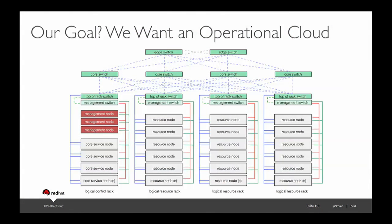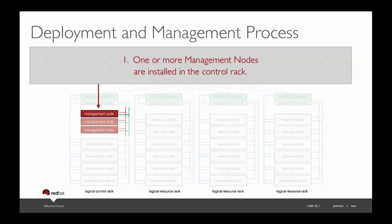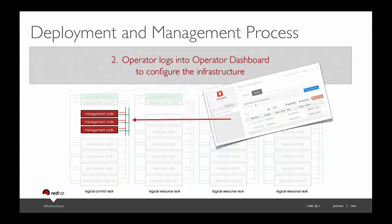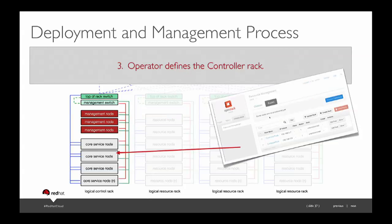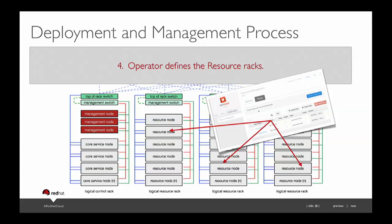Our goal is to have an operational cloud. The red boxes are management nodes — the three instances of Triple O — your command and control cloud — and they're going to deploy to the white boxes on the screen. First, you install Triple O onto one of these management nodes. You can start with just one, but Robert Collins recommended three for redundancy. You can go one to three or whatever number you need based on the size of your cloud. Once that's up and running, you log into Horizon as the operator, define the controller rack and your resource racks — second rack could be block storage, third rack object storage, last rack compute — depending on your business requirement.